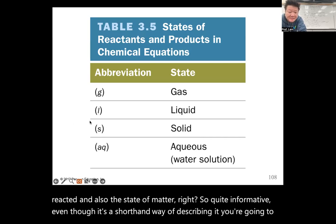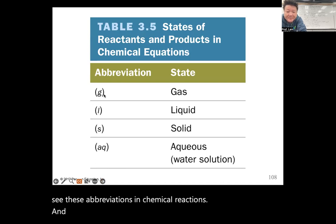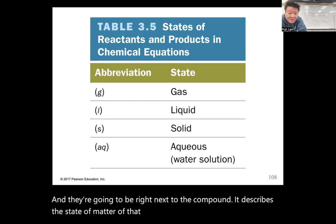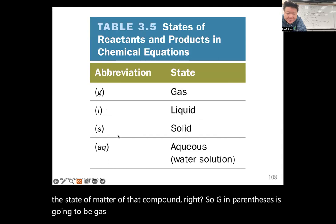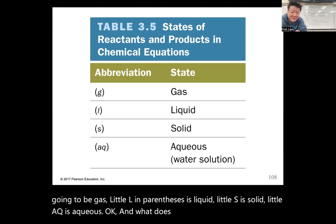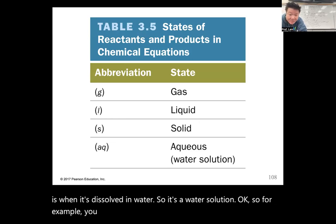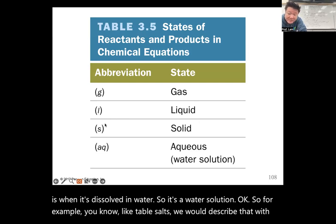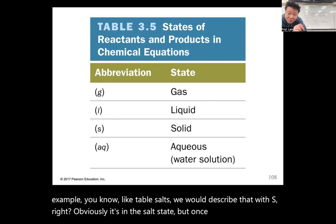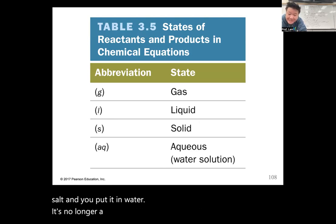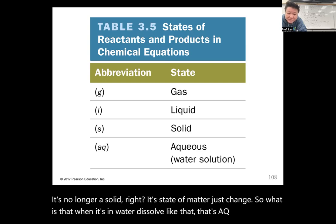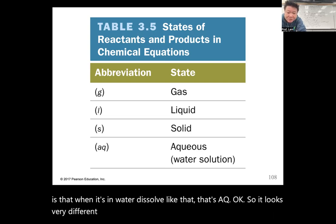You'll see abbreviations in chemical reactions right next to the compound describing the state of matter: (g) is gas, (l) is liquid, (s) is solid, and (aq) is aqueous — meaning dissolved in water, a water solution. For example, table salt in its solid state is (s), but once dissolved in water it becomes (aq), because its state of matter has changed.